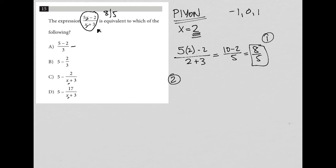Choice A: when I simplify, 5 minus 2 is 3. 3 divided by 3 equals 1. 1 does not match 8/5, so A is eliminated.